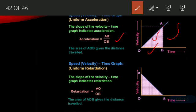Next is the speed or velocity-time graph for uniform retardation. You can see that the slope is going down — it is declining, showing retardation. This is a negative acceleration graph. The slope of the velocity-time graph indicates retardation, and retardation is equal to AO upon OB, where AO is velocity and OB is time. The area covered inside triangle AOB gives the distance travelled.